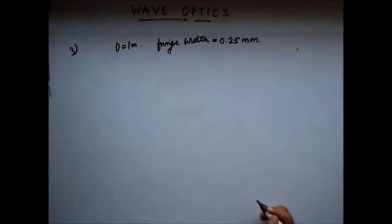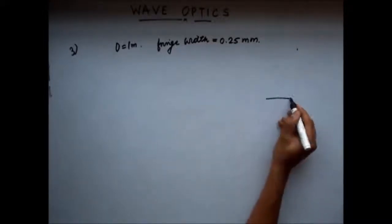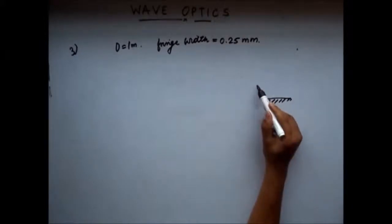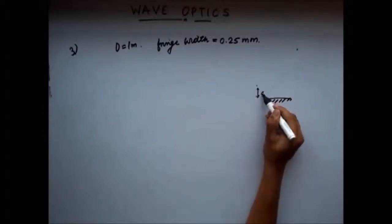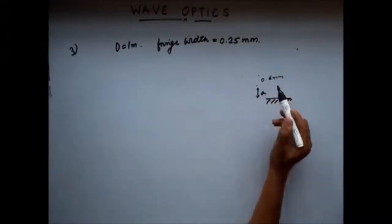Now, it says that when the source was moved away from the mirror by 0.6. So what it says is, you have a mirror here, this was the source. The source was moved away from the mirror by 0.6, so this distance, let's say, was a. Now the source was moved by a distance of 0.6 mm.